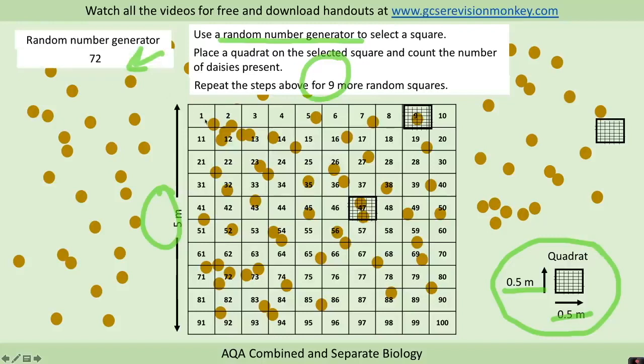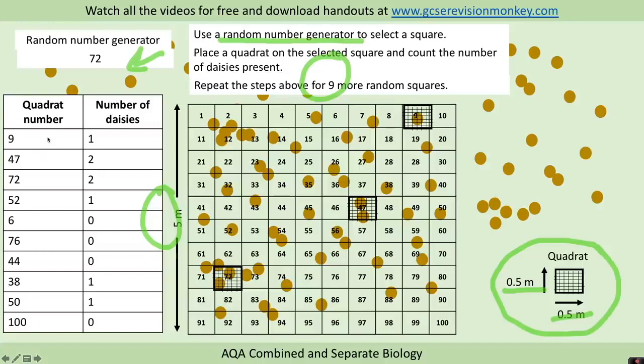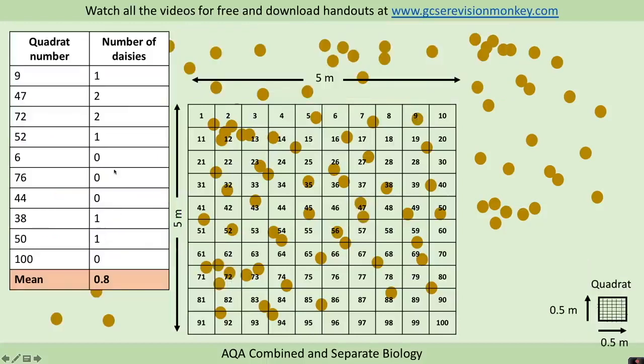For example, if our random number generator picked us 47, we'd place our quadrat on 47, count the number of daisies present. And again, for example, 72, again counting the number of daisies present. Now we'd repeat that for around 10 squares. So we've got different quadrats here and we've counted the number of daisies present in the squares.